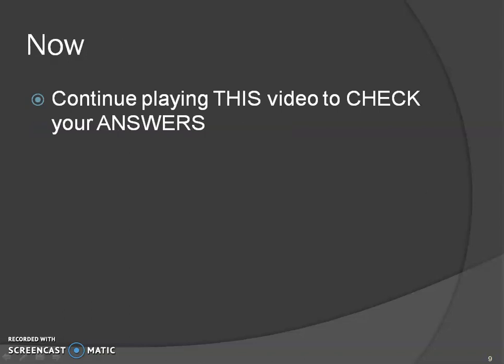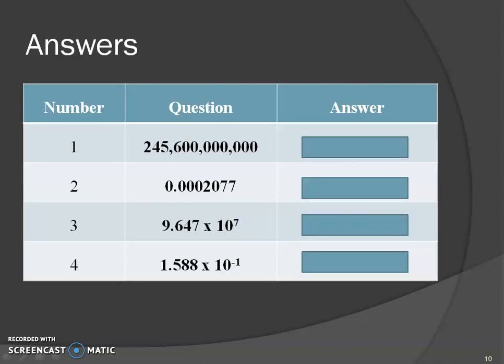You want to make sure you're understanding scientific notation and standard form and be able to go back and forth. At this point you should have paused, written down those questions, and written down your answers. Now you're coming back to this video to check your answers. If you're struggling and you don't know how to do these, at least write down what you have — you can cross it off or erase. Put a big question mark, or note that you're not understanding this so when we get to this chapter in class you can come back to these videos to review.